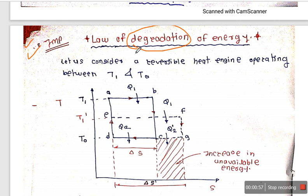The second law of thermodynamics goes further — it discusses not just conversion but also the quality of energy. It sheds light on both the quantity and quality of energy. At the conclusion of the second law, Clausius introduced the new term called entropy.